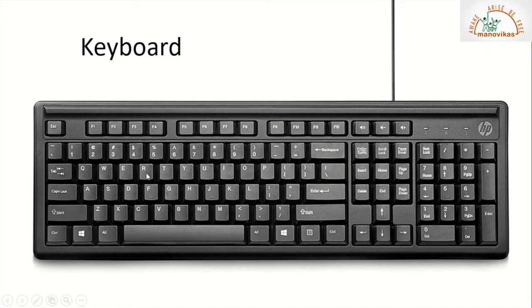Then we have our alphabet keys. Alphabet keys are from A to Z — we have all the letters here. Then come the special keys. Which are the special keys? Backspace key, Enter key, Shift key, Space bar key — all these keys are the special keys on the keyboard. We also have special character keys. Which are the special character keys? The commas, full stops, brackets, colons, exclamation mark, question mark — all these are called the special character keys. This was about a keyboard.